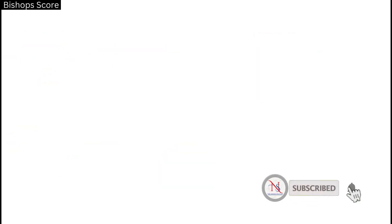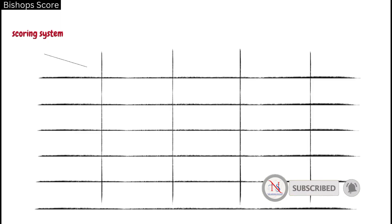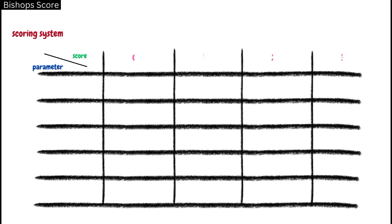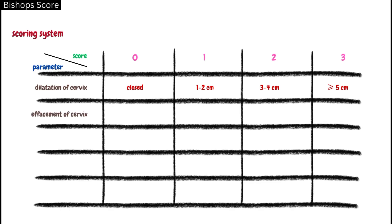Now we will see the scoring system. The five parameters are scored from zero to three. For dilatation of the cervix: when the cervix is closed it is given a score of 0; when it is 1 to 2 centimeters dilated it is given a score of 1; when it is 3 to 4 centimeters dilated it is given a score of 2; and when it is more than 5 centimeters dilated it is given a score of 3.